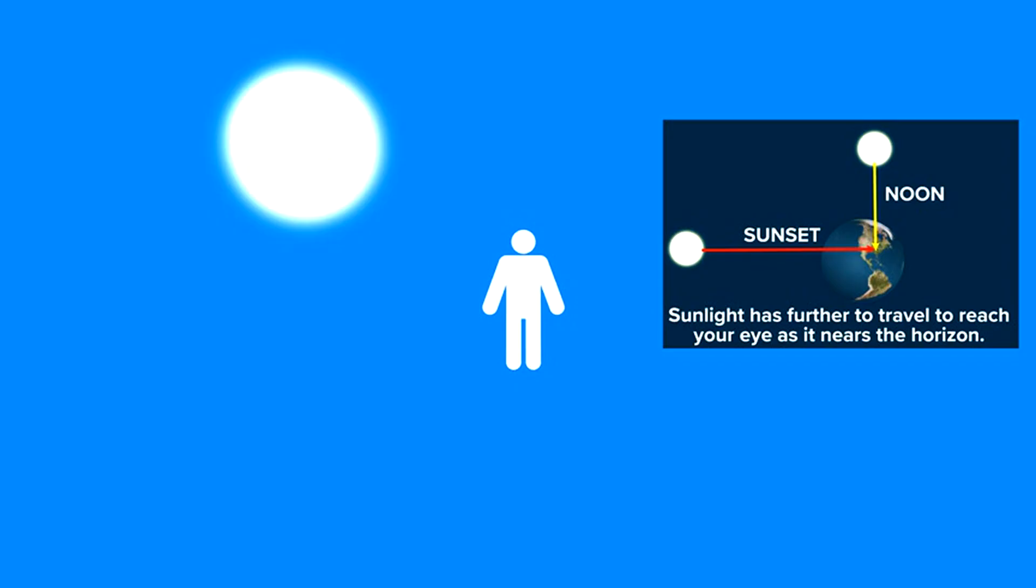But when it's down on the horizon, it may appear reddish or orangish at times. The whole reason why that happens has to do with how light is scattered by dust particles and other things in the atmosphere that help scatter that light.